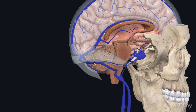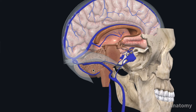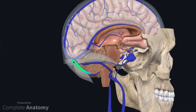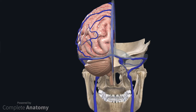The occipital sinus is located posteriorly, very close to the cerebellum. It runs behind the cerebellum to the internal occipital protuberance. All of the sinuses discussed so far run close to the internal occipital protuberance in a region known as the confluence of sinuses.